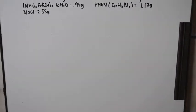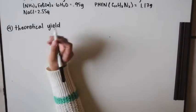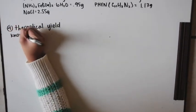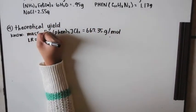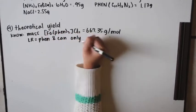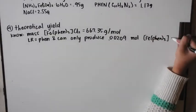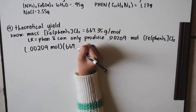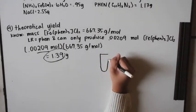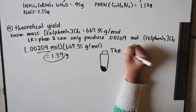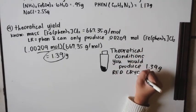Number four asks you to calculate the theoretical yield — under ideal conditions, how much red crystals could you have recovered? Iron tris-phen chloride salt has a molar mass of 667.35 grams per mole. Since phen is the limiting reagent producing 0.00209 moles, multiply the two numbers: theoretical yield is 1.39 grams.